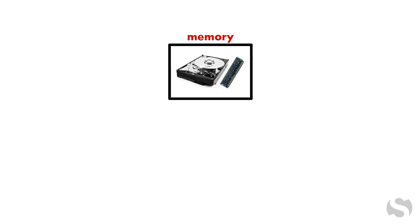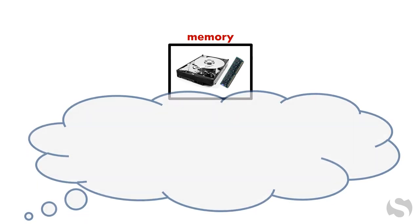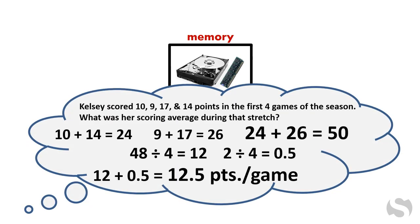Mental math is a great example of how active working memory is deployed. Active working memory is where mental math problems are solved, utilizing both new incoming info, like details from a problem, and info retrieved from long-term memory, like math facts and procedures.